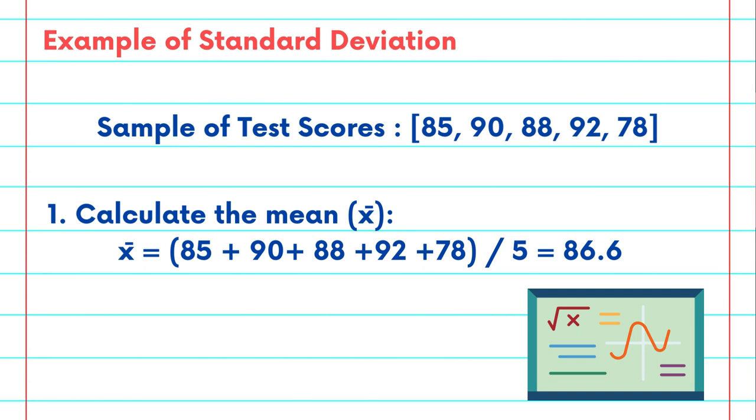The first step in calculating the standard deviation will be to calculate the mean or x̄ of our data set. So we'll see here that we add up all of our data points and divide by our sample size, which we know is 5. When we do that we can see that the average or the mean of our data set is 86.6.